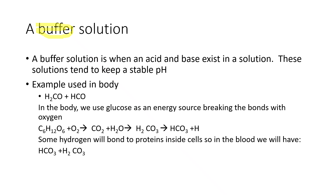In the human body, the hydrogen binds to intracellular proteins — proteins inside the cell — and the bicarbonate is released into the blood. The hydrogen stays in the cells, and you have the carbonic acid buffer in your body that tries to keep blood at a certain pH. If your pH changes, you can end up dying — so this buffer is really important.